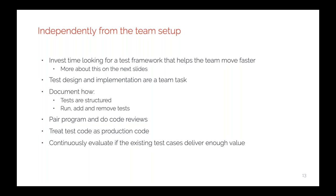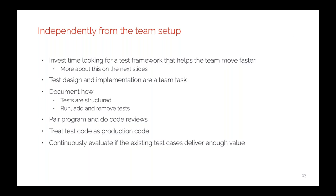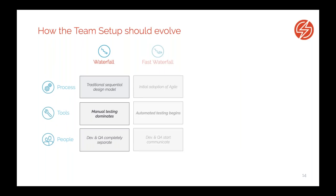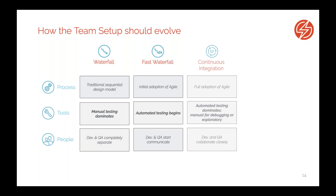One thing that is super valuable is that we should continuously evaluate if the test cases we have are delivering value. For example, if we have test cases for a web UI login but somebody has already written those tests at the API level, maybe we can deduplicate and only have tests in the correct layer where they deliver enough value. And it doesn't matter how the team setup starts — what's important is that we should never be happy with the current situation and should find ways to evolve.